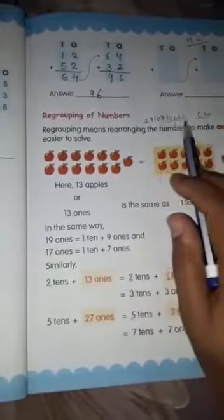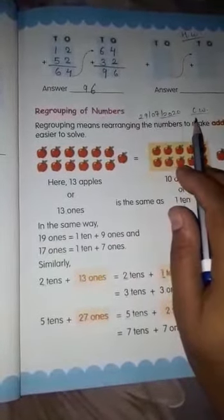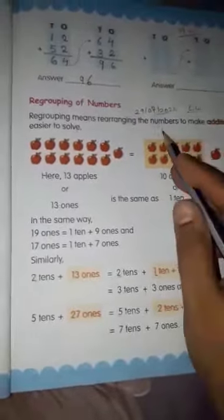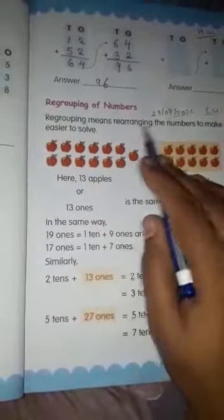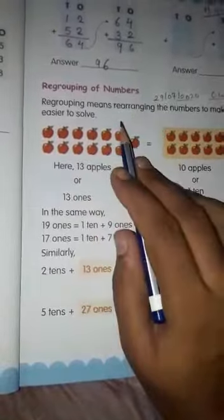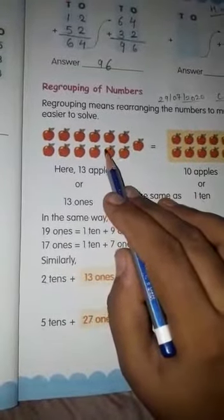Now the next topic is regrouping of numbers. First of all you have to write date and classwork also. Regrouping means rearrange. What is the meaning of regrouping? It means rearranging the numbers to make additions or to solve. Regrouping means numbers are rearranged.